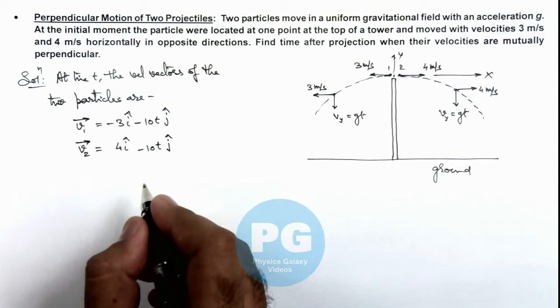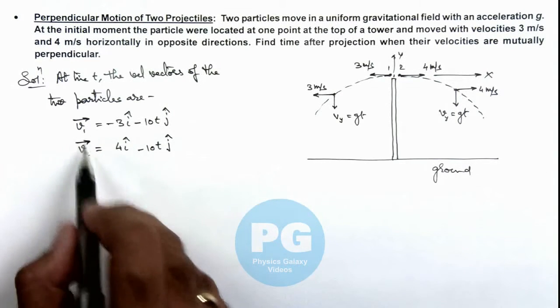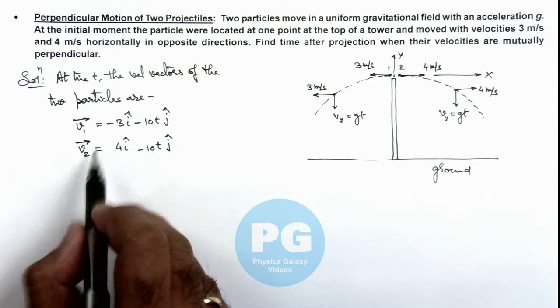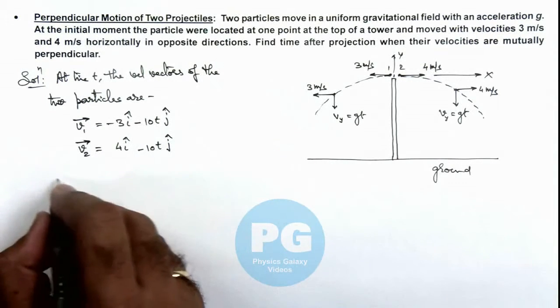Now here we are given that after some time the two velocity vectors are perpendicular to each other, and we are required to find the time. So we can say: